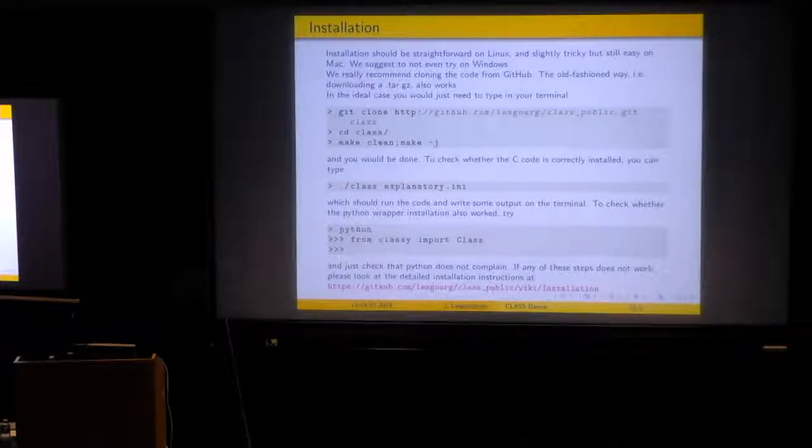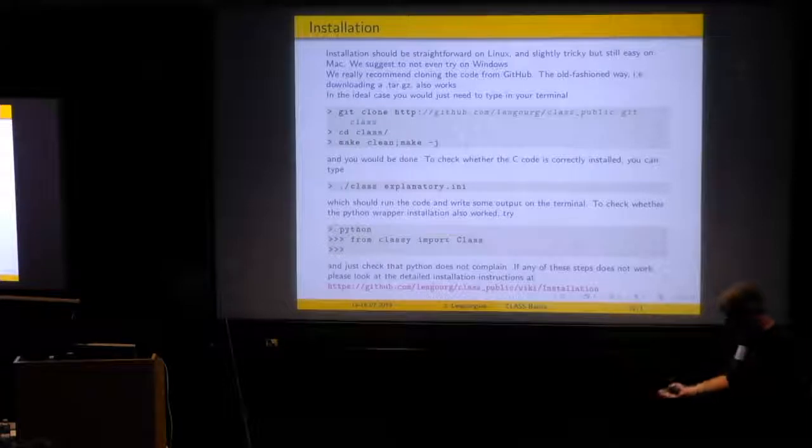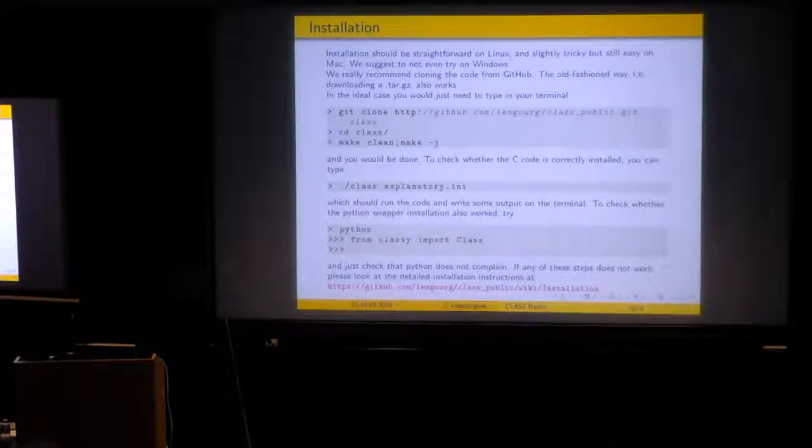OK, so suppose that you have downloaded or cloned the code. In principle, you just need to compile with a make clean and make. The minus J is for faster compilation on multi-threads. And then we will see that this is a reference input file. If you can run this command and you get some output, everything works nicely. Now, what is usually easy in Linux and more tricky on a Mac is the compatibility between the C code and the Python wrapper because you have to think of installing Python modules that are compiled with the right C compiler. So if everything works nicely, when you do a make instead of just make class, it will first compile the C code. And usually there are no problems and then it will compile the Python wrapper. And this is where you might see a problem of compatibility.